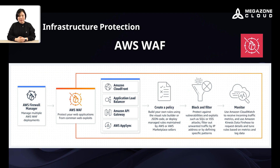AWS WAF is a service that helps protect your web applications from common web exploits and attacks, such as SQL injection, cross-site scripting, and DDoS attacks. It provides managed rules as well as customizable rules to control and filter incoming web traffic based on conditions like IP addresses, HTTP headers, or request patterns. It integrates with AWS services like Amazon CloudFront, Application Load Balancer, and API Gateway, providing a scalable and managed solution to enhance the security of your web applications.